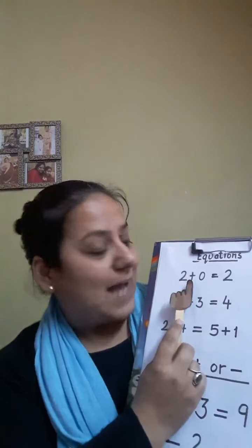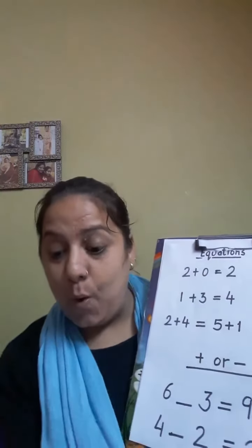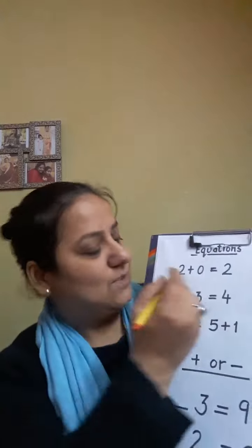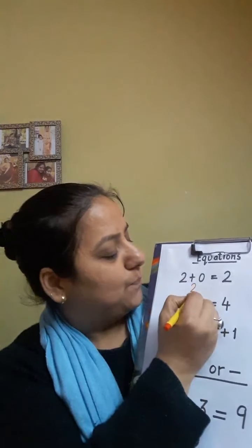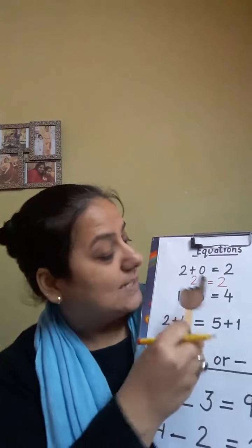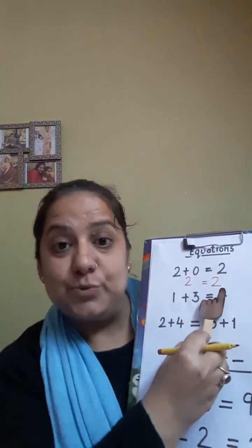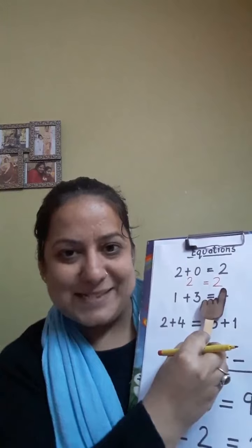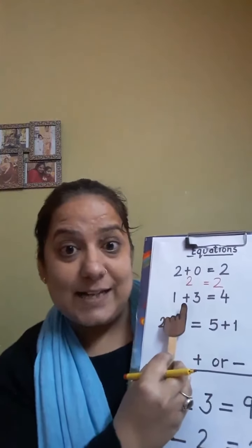So if we add 2 plus 0, what we'll get? Yes, we are going to get 2. And here it's 2. So the left hand side is equals to the right hand side. So let's see the next example.